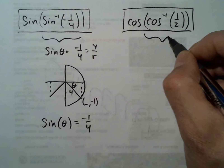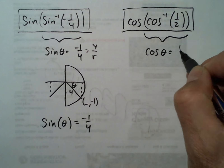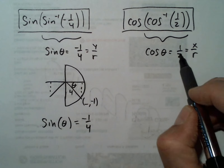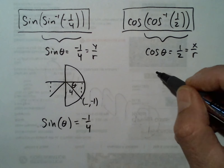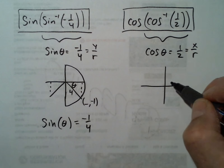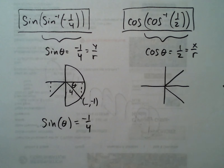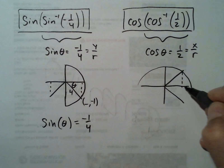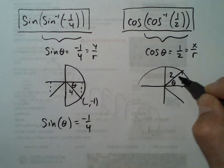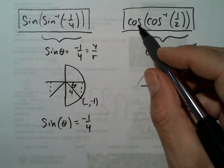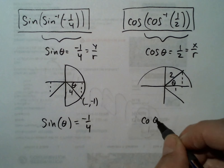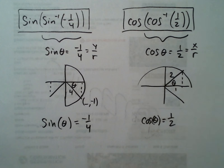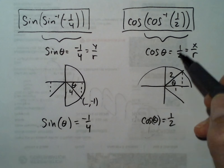Find the angle that has a cosine of 1/2. Cosine is x over r, and x is positive, so the angles would be in the first or fourth quadrant. But inverse cosine can only have values from 0 to π, so we know we're dealing with the first quadrant angle. That's theta, and then cosine of theta is x over r — we see it again, and we get 1/2.